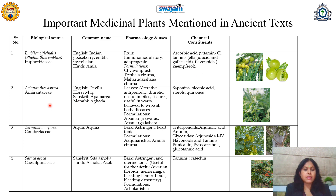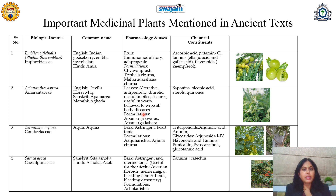The next drug is Achyranthes aspera, belonging to family Amaranthaceae. In English, it is called as Devil's Horsewhip. In Sanskrit, it is called as Apamarga, and in Marathi, it is called as Aghara. This plant is traditionally and from the ritual point of view also very useful. It is used in various types of rituals like Khartalika, Shiv Puja, or Roshypanchamis.